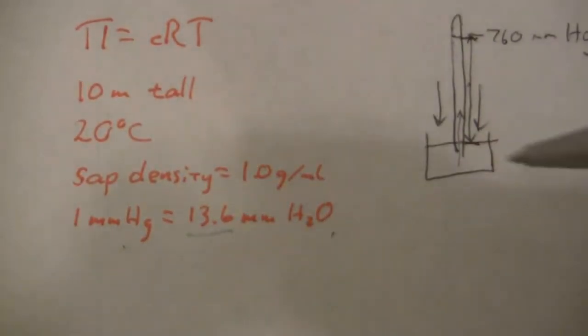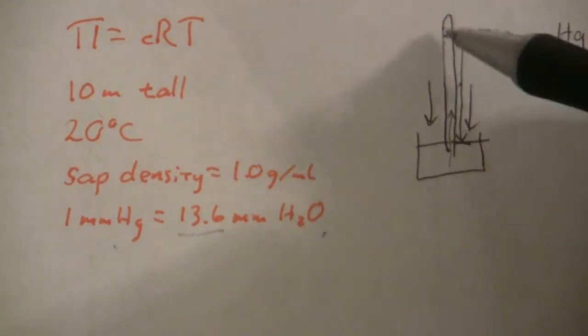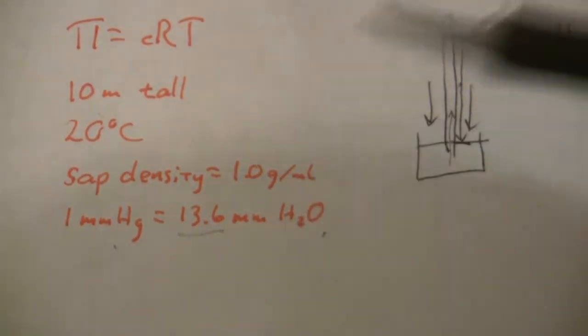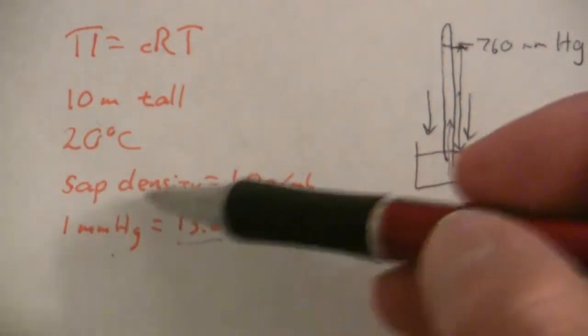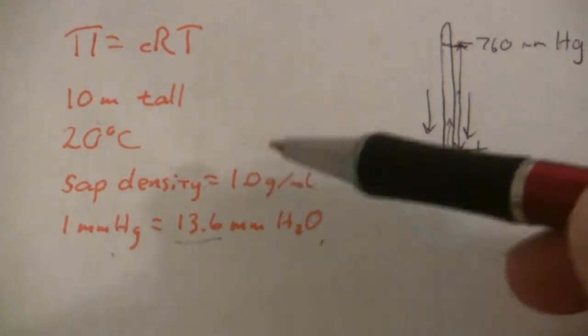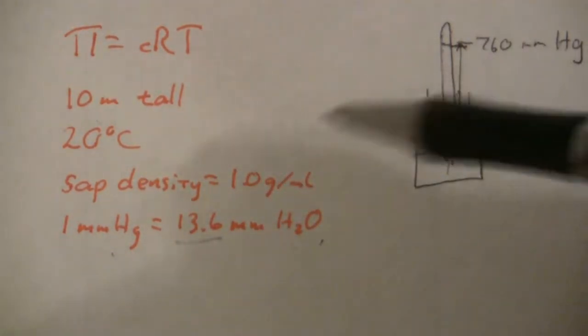Now in our tree, we have this same arrangement where we have a column, not of water, but of sap. And that's why we're given the sap density, same as water, so we can treat it as though it is water.